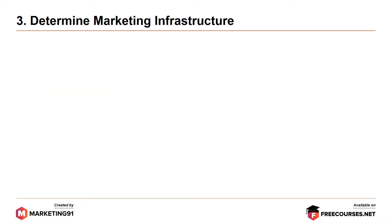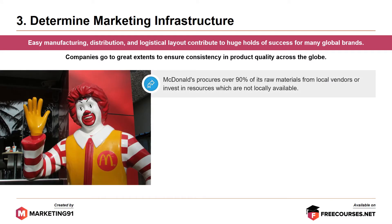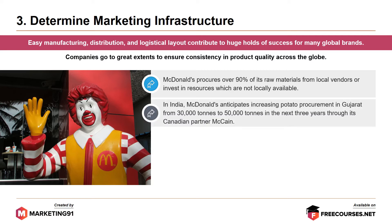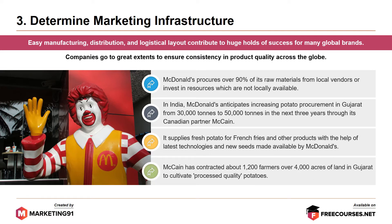Moving further to the third commandment: determine marketing infrastructure. Easy manufacturing, distribution, and logistical layout contribute to huge success for many global brands. Companies go to great lengths to ensure consistency in product quality across the globe. For instance, McDonald's procures over 90% of its raw materials from local vendors. In India, McDonald's anticipates increasing potato procurement in Gujarat from 30,000 tons to 50,000 tons through its Canadian partner McCain, which supplies fresh potatoes for french fries. McCain has contracted about 1,200 farmers over 4,000 acres of land in Gujarat to cultivate processed-quality potatoes.